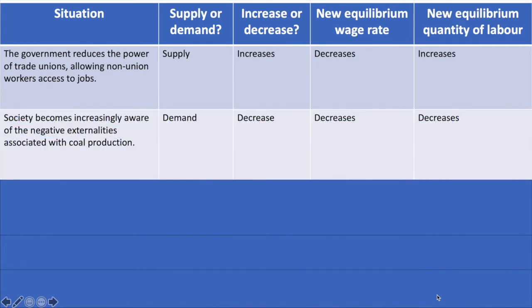Second, if society becomes more aware of these negative externalities, then it's likely their demand for coal will fall and thus the demand for workers in the industry will fall. This will cause the equilibrium wage rate and equilibrium quantity of labour both to fall.